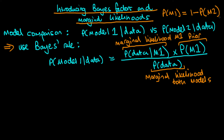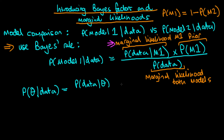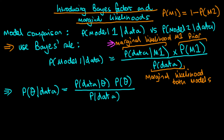Starting with the numerator term — the marginal likelihood for model one — how do we actually calculate that? It turns out we need to think of another application of Bayes' rule, the traditional one used in Bayesian inference. In Bayesian inference, what we're typically trying to do is find the posterior probability or probability density for some parameter vector theta conditional on our data, which is equal to the likelihood — the probability of our data conditional on theta — times the prior probability of theta, divided through by the probability of our data.